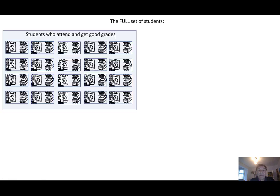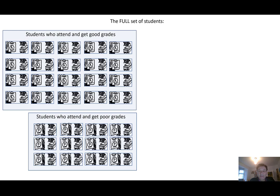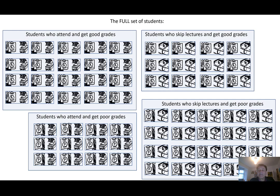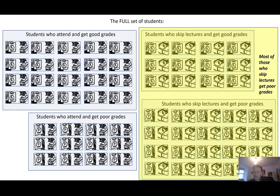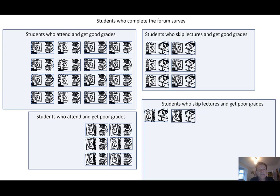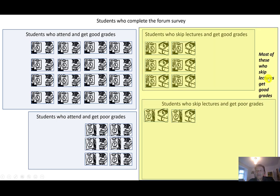Let's make this even more explicit. Here is the full set of students: those who attend and get good grades, those who attend and get poor grades, those who skip lectures and get good grades, and those who skip lectures and get poor grades. If we focus on students who skip lectures, most of those get poor grades — that's the reality. But if we focus only on students who complete the forum survey, very few of those who skip lectures and get poor grades complete it. So most of those who skip lectures in the survey get good grades, and there you see the problem.